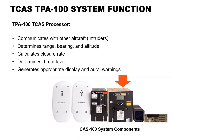The TCAS system monitors the airspace surrounding your aircraft by interrogating the transponder of intruding aircraft. The interrogation reply enables TCAS 2 to compute the following information about the intruder: range between your aircraft and the intruder, relative bearing to the intruder, altitude and vertical speed of the intruder if the intruder is reporting an altitude, and closing rate between the intruder and your aircraft.